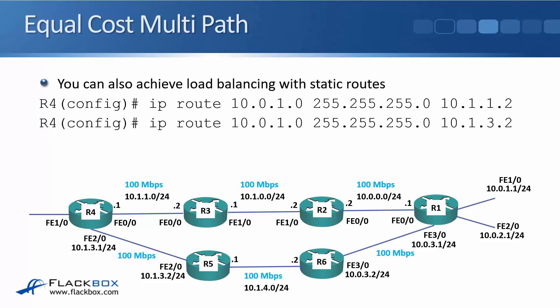You can also achieve load balancing with static routes as well. To do that, just configure two different static routes, both for the exact same subnet and the same subnet mask, but put in two different next hops. That will install two different routes into the routing table, and traffic will be load balanced over both of them. You can have more than two routes if you wanted to — if you put in three routes, it would load balance over all three. This is the same for our IGP routing protocols as well.